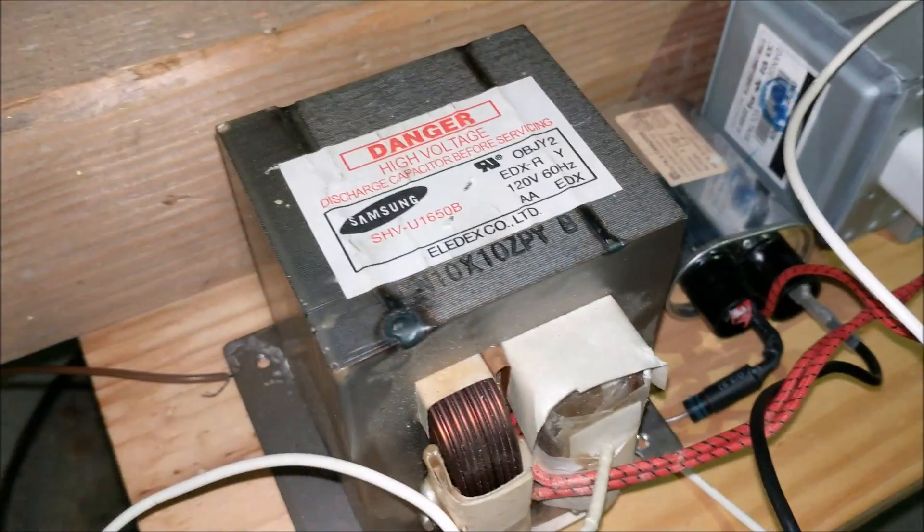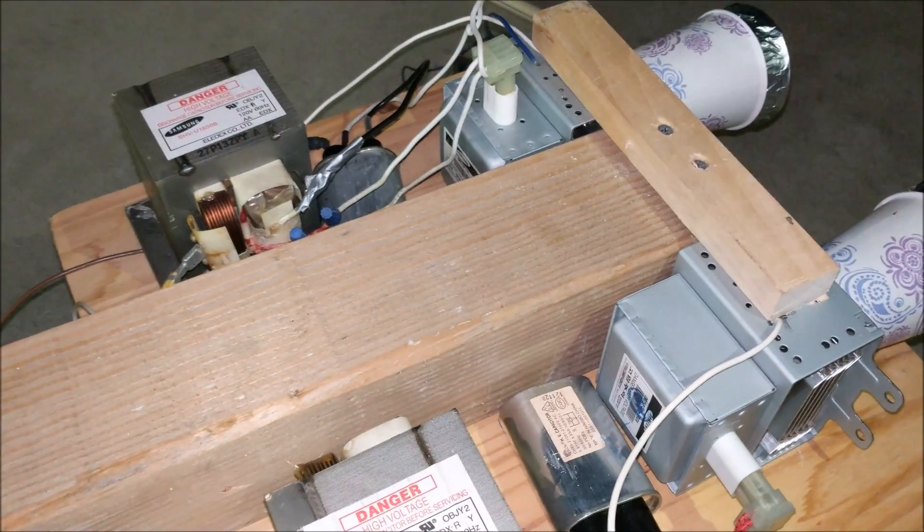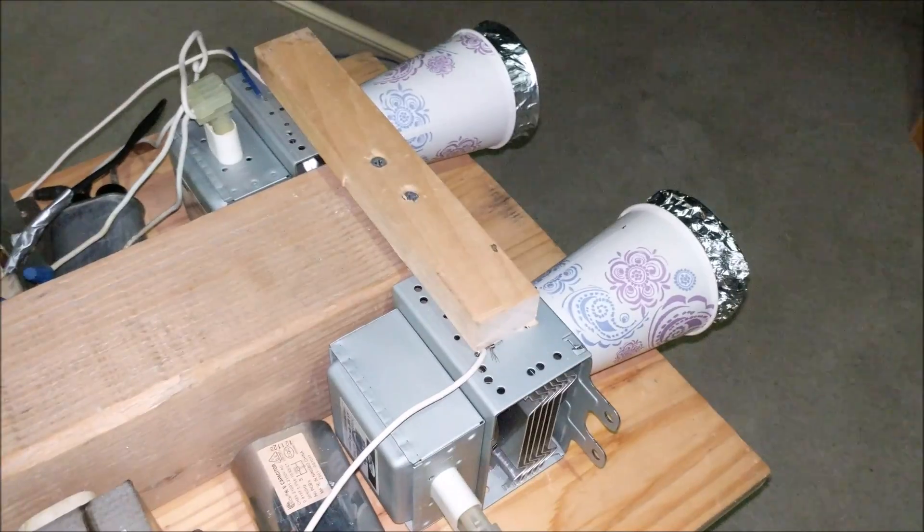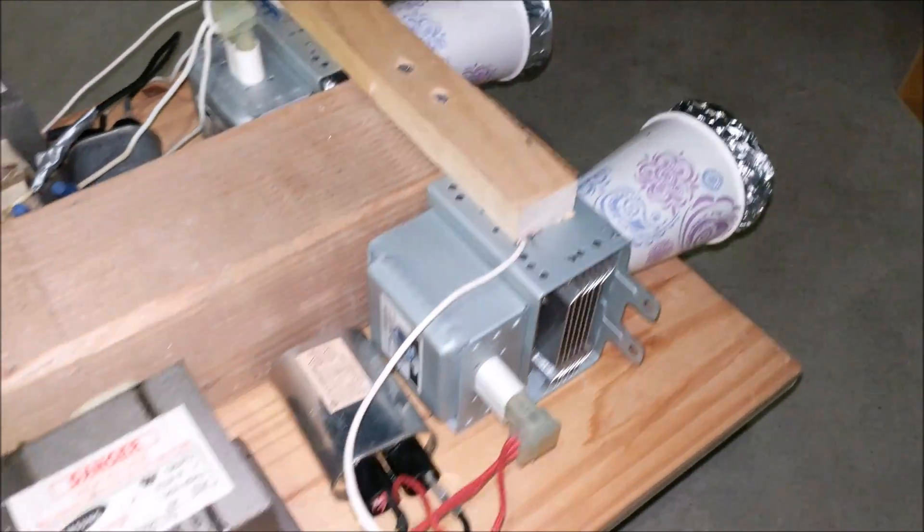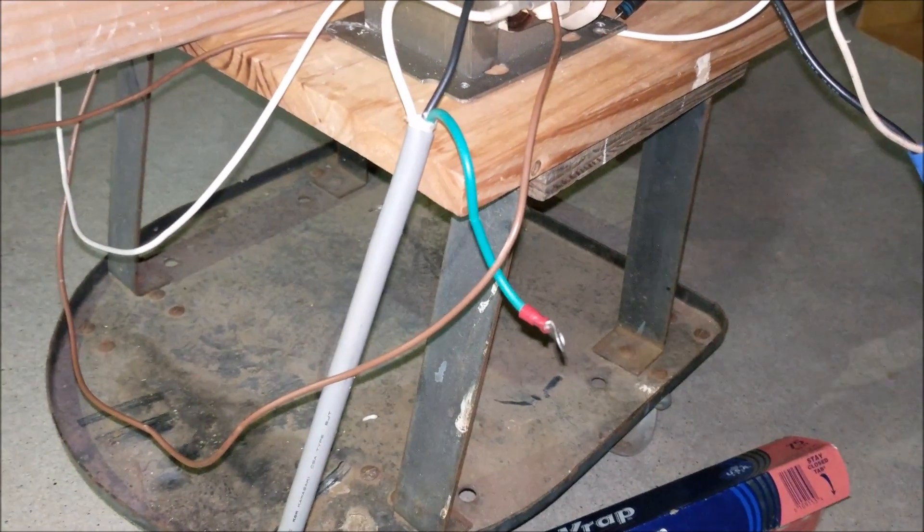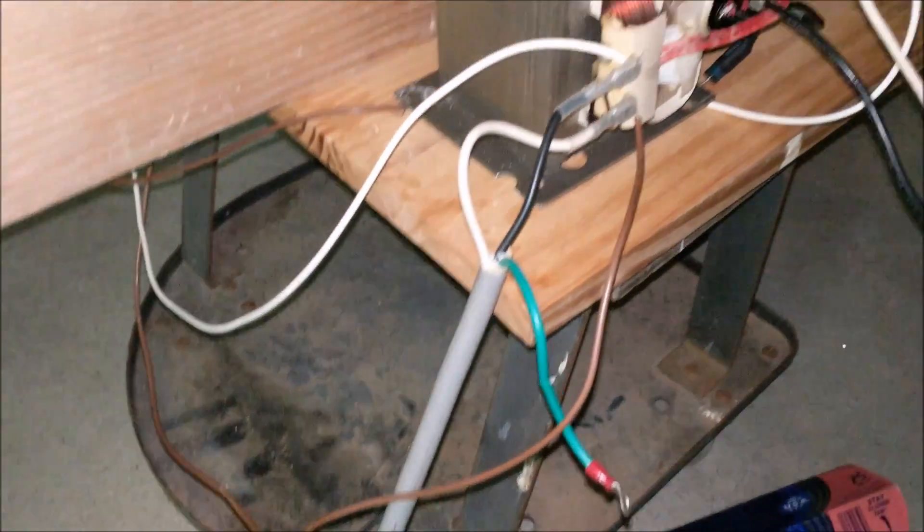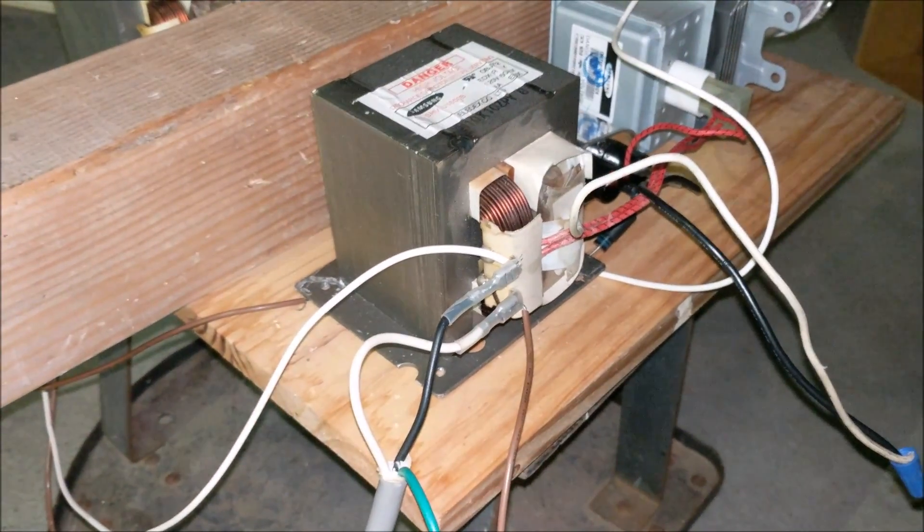So what we did here is we mounted two of these microwave assemblies with two different beams on this chair or stool, so that way it can be easily moved around. This is then wired to the wall and it will work really well. So let's see what this thing can do.